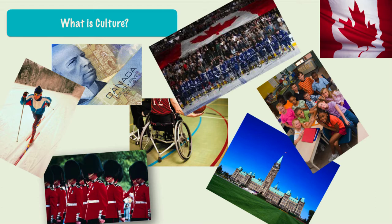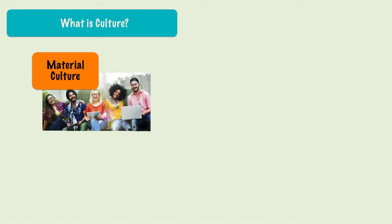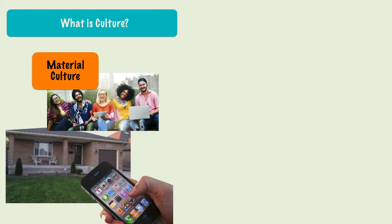Shelter is a universal type of material culture, but it comes in a wide variety of shapes and forms. We'll begin with material culture — it's all the physical or tangible creations that members of a society make, use, and share. Technology and its association with material culture is the knowledge, techniques, and tools that make it possible for people to transform resources into usable forms, and the knowledge and skills required to use them after they have been developed.